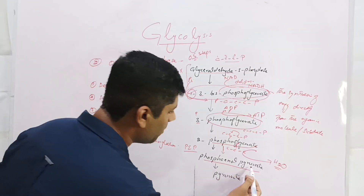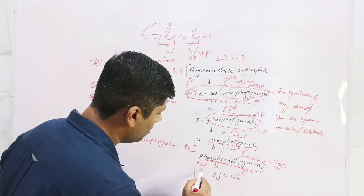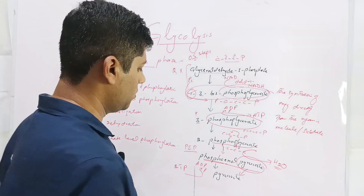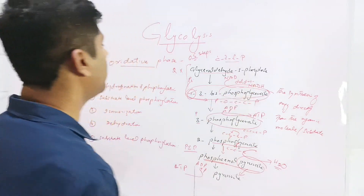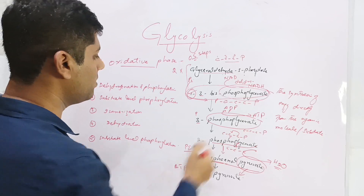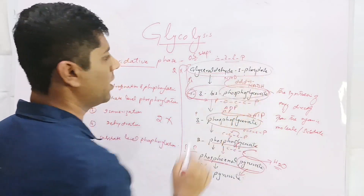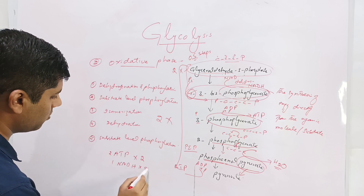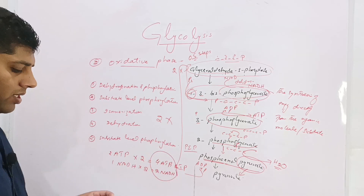Finally, substrate-level phosphorylation occurs again. Phosphoenolpyruvate loses its phosphate group, which is donated to ADP to produce ATP, leaving behind the pyruvate molecule. In this oxidative phase, two ATPs and one NADH have been produced per G3P molecule. Since we started with two G3P molecules from the preparatory phase, we multiply by two: giving a total of four ATPs and two NADH molecules from the oxidative phase.